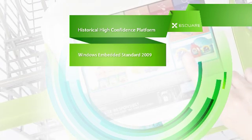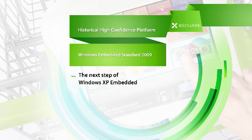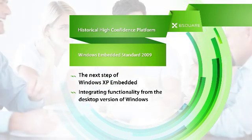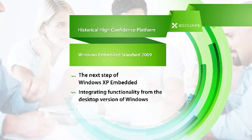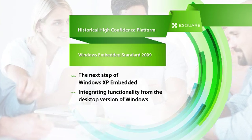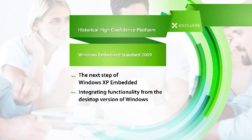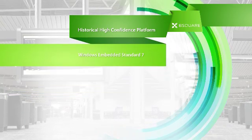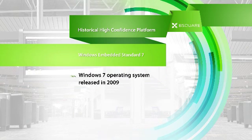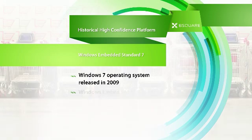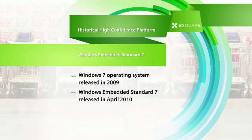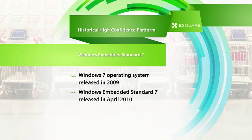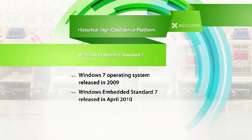At the end of 2008, Windows Embedded Standard 2009 became the next evolutionary step in the history of Windows XP Embedded. By integrating functionality that previously was only available in the desktop version of Windows, Windows Embedded Standard brought together the best qualities of Windows XP Embedded and the desktop version of Windows. In 2009, Microsoft released the Windows 7 operating system, and in April 2010, Microsoft released the next generation of the componentized operating system called Windows Embedded Standard 7, delivering Windows 7 technologies to device manufacturers.